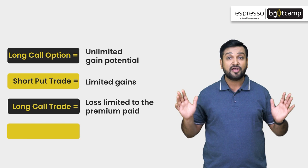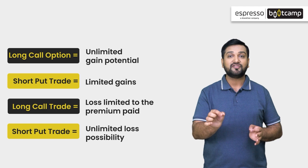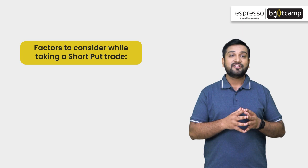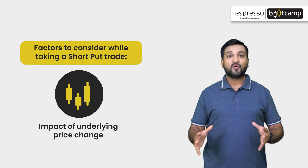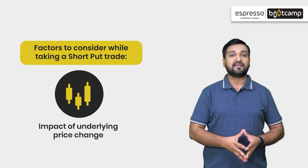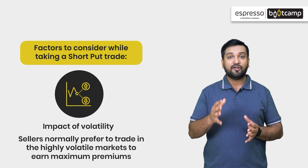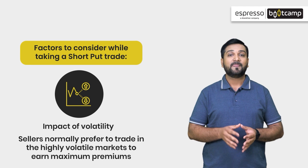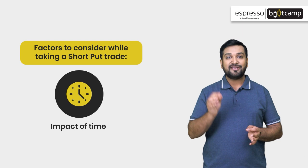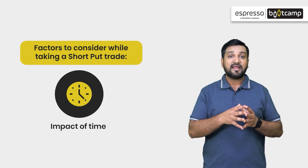It is always suggested to use a stop loss while taking any trade. As for factors to consider, the trader has to watch the underlying asset price change. Traders should also be aware of volatility — ideally entering a short put trade at high implied volatility, since high volatility means they receive a larger premium. The next important factor to consider is the impact of time. A short put trade can end up in profit even if the direction is slightly wrong, as long as the price has failed to cross the break-even point by the time of expiry.